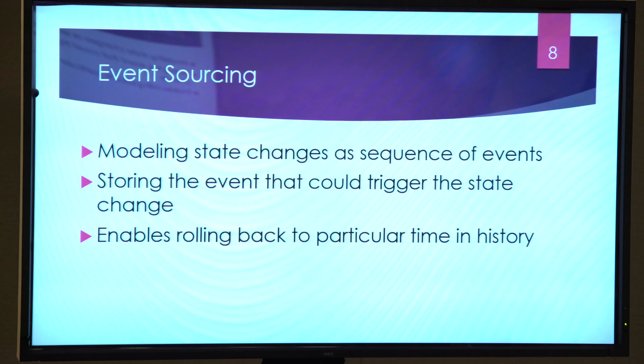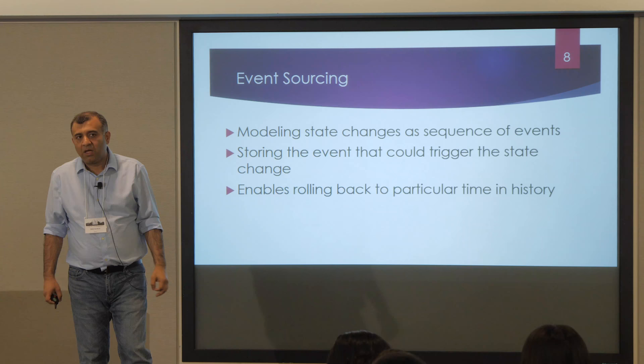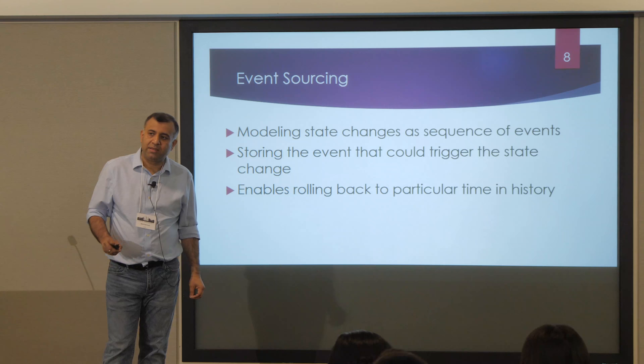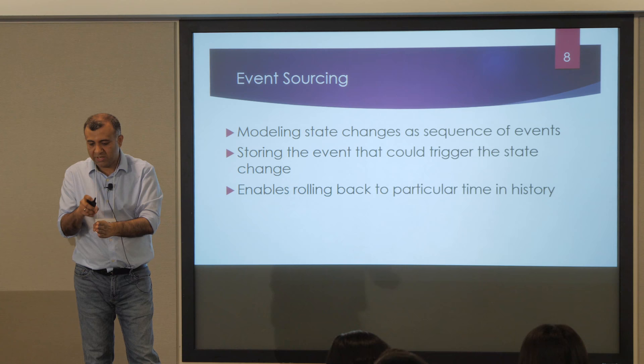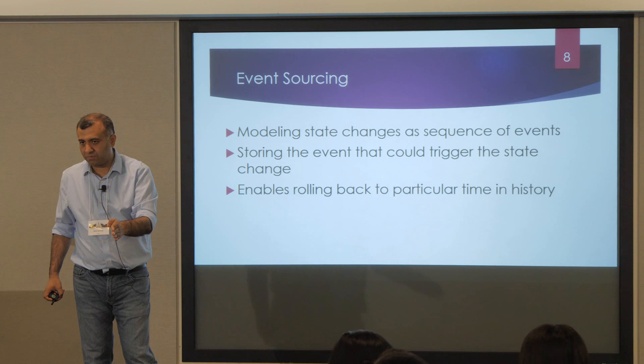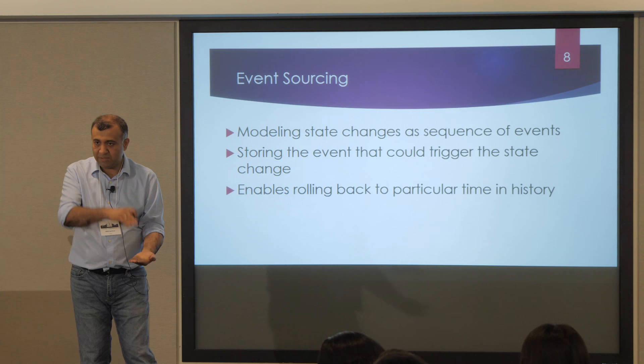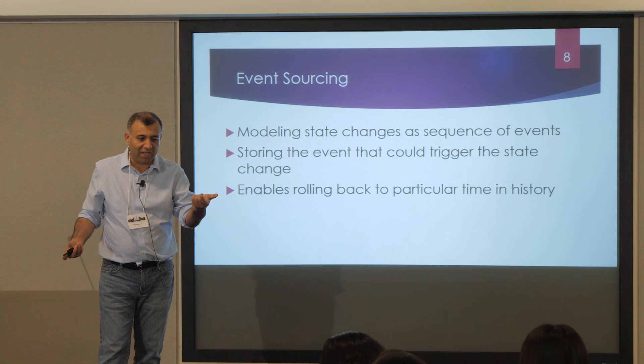A common question about event sourcing is: isn't it slow if you have to replay all events to get the system state? Well, yes — but there are practical ways to mitigate this. One approach is caching: you cache the system state at midnight, so at 8 AM you take the midnight cache and only replay events from midnight to 8 AM. Banks do something similar — they always show the final account balance alongside each transaction.